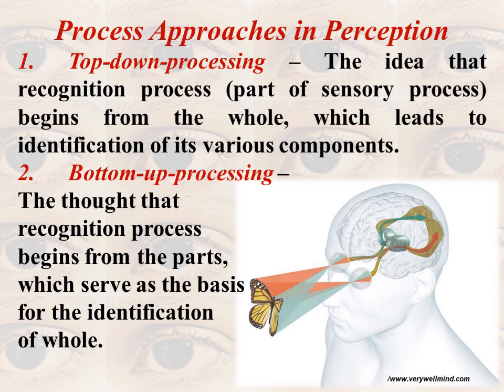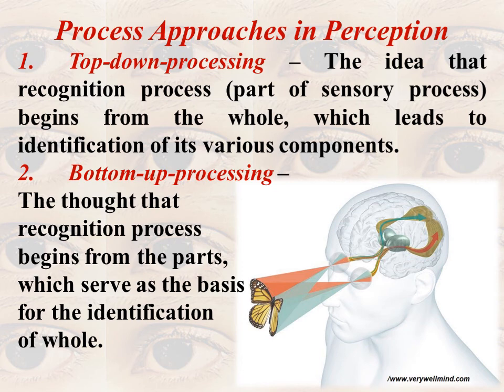In contrast, just opposite to top-down processing, is bottom-up processing. The idea here is that the recognition process begins from the parts, which serve as the basis for the identification of the whole. Using the same example of the bike — bottom-up processing says first we look at the parts and components of the bike: the seat is very beautiful, the stands, the footrest, the engine, the carburetor, the design. First we perceive the parts, and after that we perceive it as a whole. So the process approach in perception contains two parts: top-down processing and bottom-up processing.